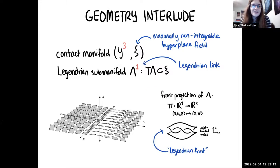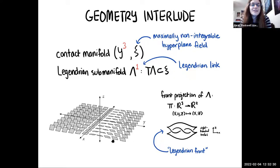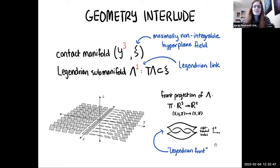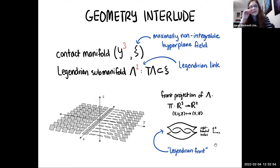Here's a reminder of the standard contact structure on R3 — there are no vertical tangencies; these planes are never totally vertical. When we take the front projection of our knot onto the XZ-plane, we get these pointy diagrams called Legendrian fronts. Because the knot can never go vertically, from the side that looks like having cusps. These specific diagrams of Legendrians are what I'll be thinking about.